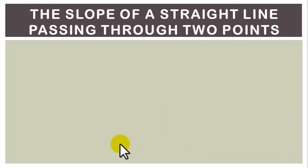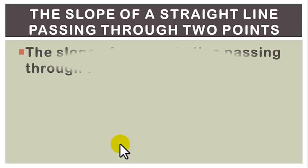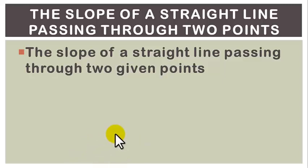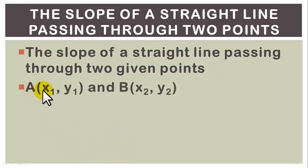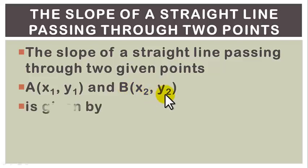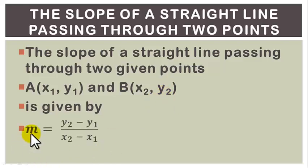The slope of a straight line passing through two given points A with coordinate (x1, y1) and B with coordinate (x2, y2) is given by m equal to y2 minus y1, all over x2 minus x1.